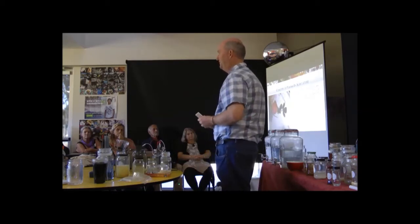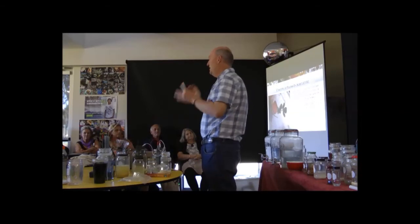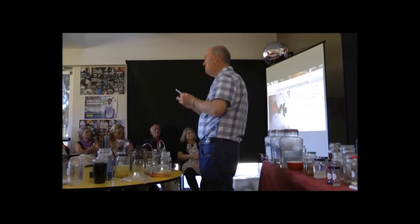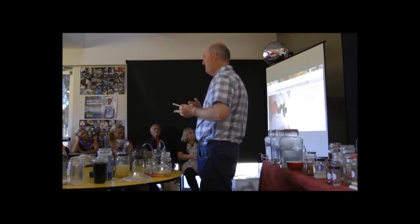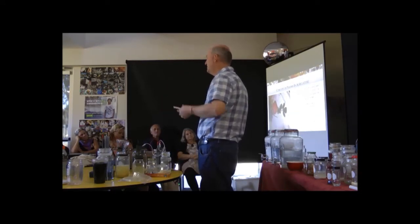The same applies to wheat. Wheat is a grass, and it's been modified and hybridized over the years into what we know as a monoculture — one stalk that's cut and dies. The original wheat had multiple stalks; you cut it and it grows again, just like grass, because it is a grass.